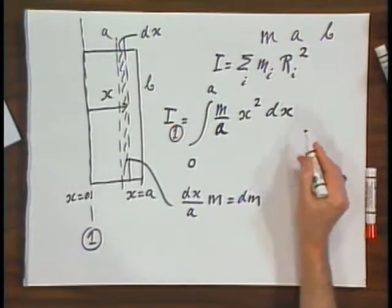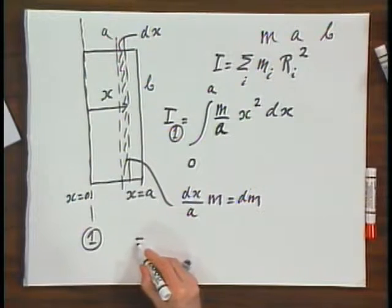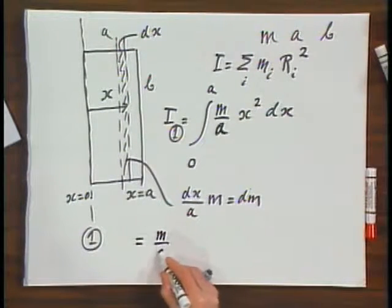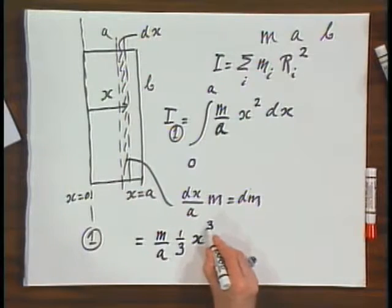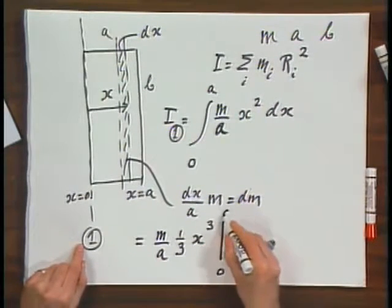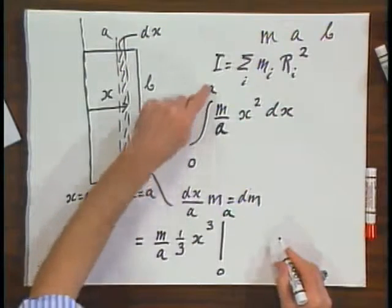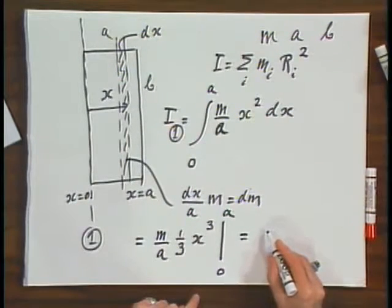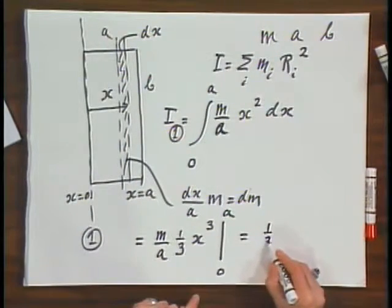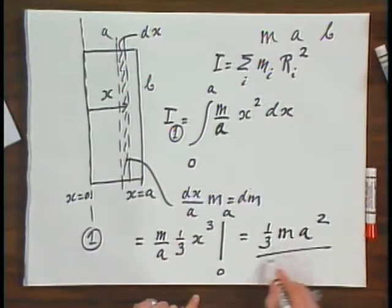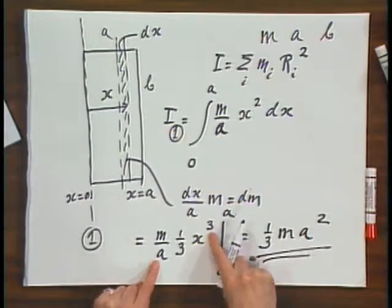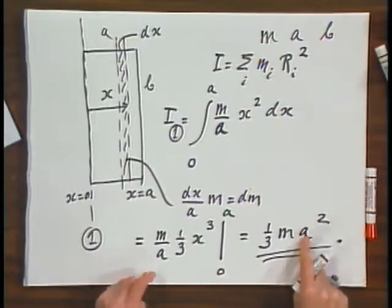And this is not a very difficult integral. That integral becomes M over A times one-third x to the third, and I evaluate that between 0 and A, because x goes from 0 to A, and so this becomes one-third M times A squared. See, I lose one A here, I get an A to the third, and an A downstairs, I have A squared.